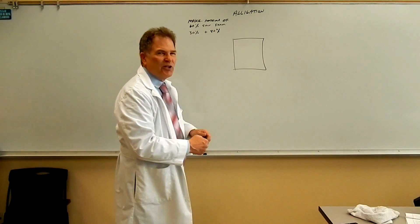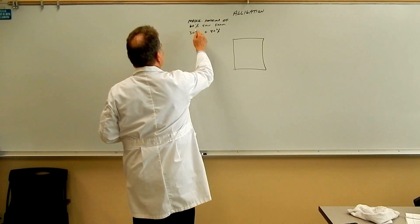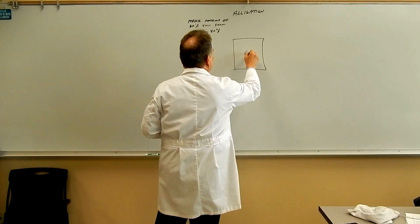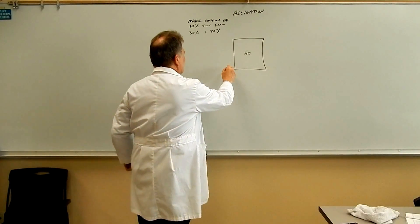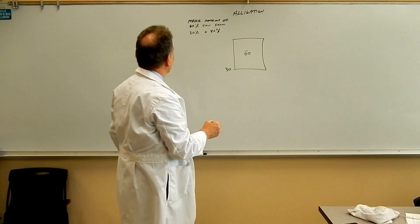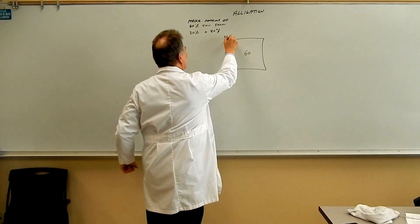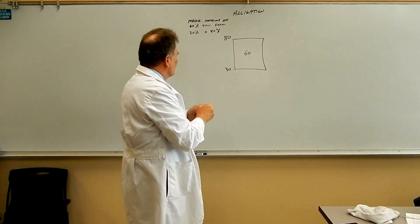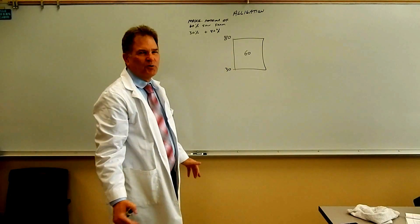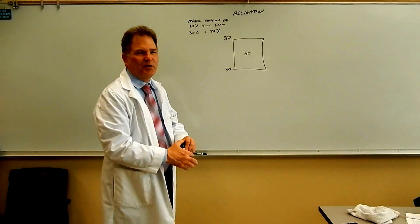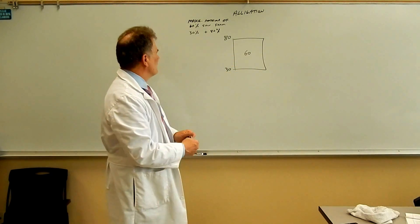You put whatever you're going to make in the middle. So we're going to make a thousand mLs of a 60% solution so that goes in the middle. You put the lower strength in the lower left hand corner and you put the higher strength in the upper left hand corner. This is one case where you can leave off the units. Normally all the units have to always be on the problems but since these are all percentages we can leave them off.